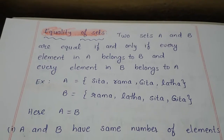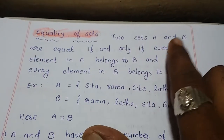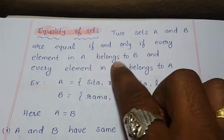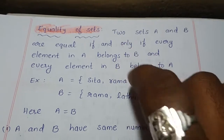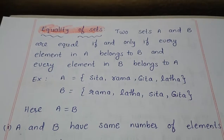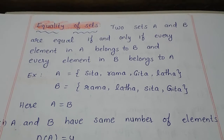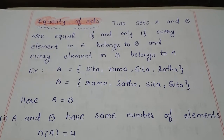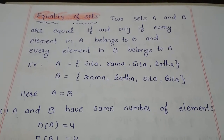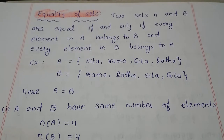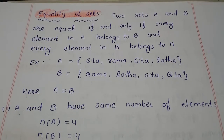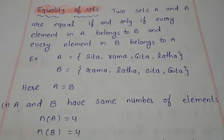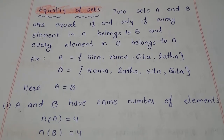Observe the definition: two sets A and B are equal if and only if every element in A belongs to B and every element in B belongs to A. We have to check two conditions: whether the two sets contain the same number of elements and the same elements. If both conditions are satisfied, the sets are equal. Two or more sets with the same number of elements and the same elements are called equal sets.